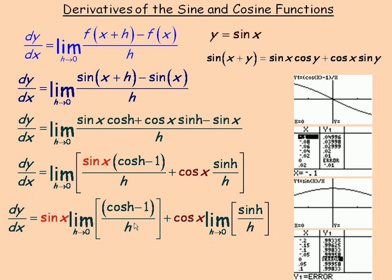So this limit is zero and this limit is one. Since the first limit is zero, we have sine x times zero, which vanishes. The second part is cos x times one. So the derivative is just cos x — the derivative of sine x is cos x.